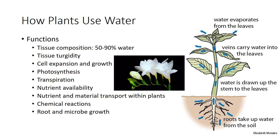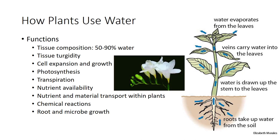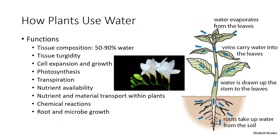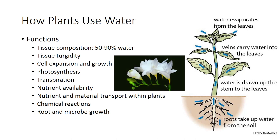Photosynthesis uses water as a building block in the manufacture of carbohydrates. Transpiration, or evaporation of water on the leaf, cools the plant. Plant nutrients dissolved in soil water move toward roots through the water. Water is thus important in making nutrients available to plants. Water carries materials such as nutrients and carbohydrates throughout the plant. Water is the solvent in which chemical reactions occur in the plant. Moist soil has lower strength than dry soil, easing root growth.